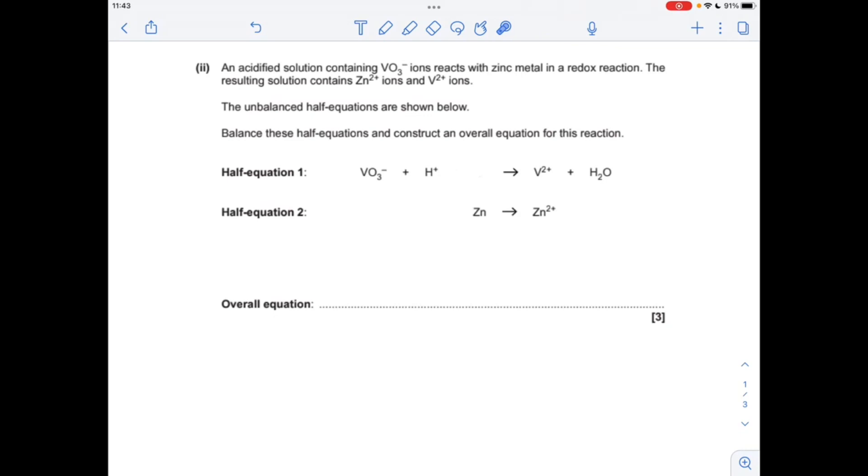The first thing you do using the electrons in last method is balance the atoms. We've got one V, one V, they're fine. Three O's, so we need a three in front of that. That's introduced six H's, so we'll need six H+. Now we're going to balance the charge by using electrons. At the moment, the overall charge on the left is 5+, and on the right it's 2+, so we need three electrons to bring this 5+ charge down to 2+.